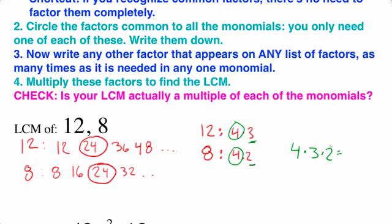So my final answer is going to be 4 times 3 times 2. 4 times 3 is 12, 12 times 2 is 24. We get the same answer.